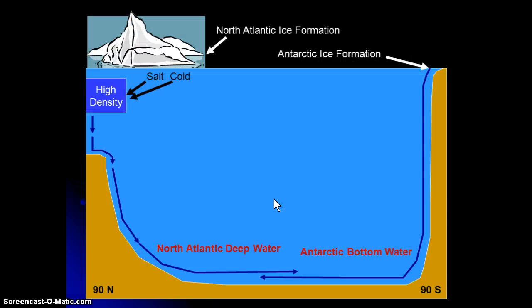How does the deep water form? Because without this formation we still wouldn't have both separate layers. We would just have a gradient from warmer, fresher water down to cooler, saltier water. We wouldn't have that definite stratification of the two layers.